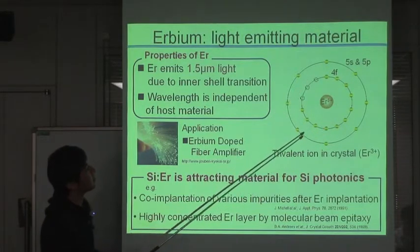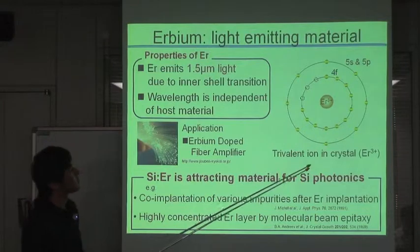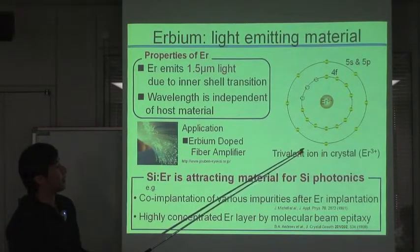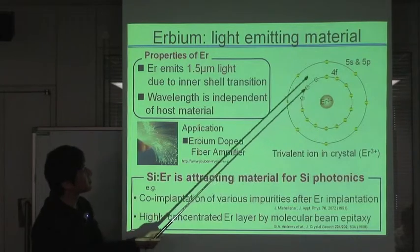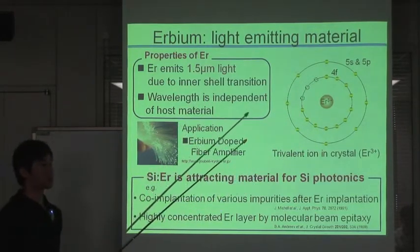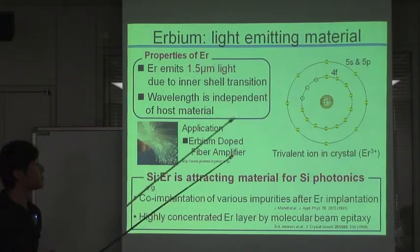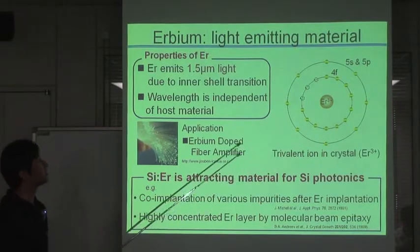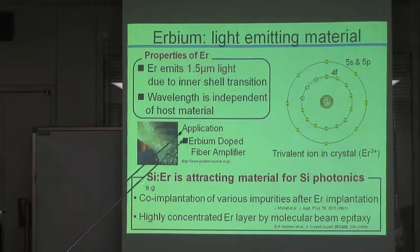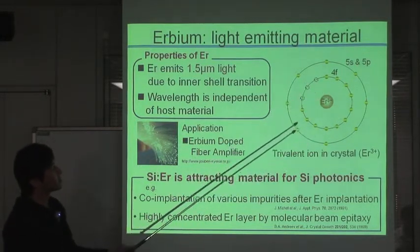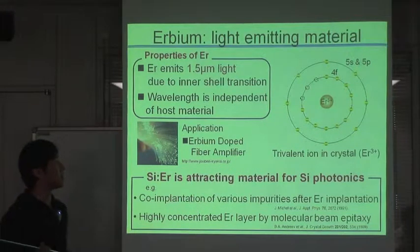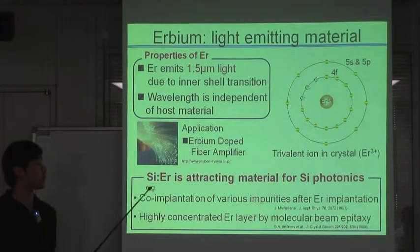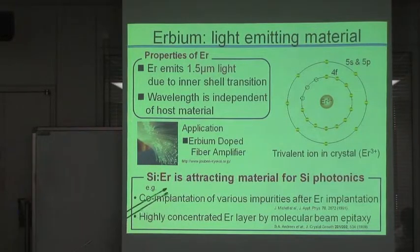The 4F electrons are occupied incompletely while the outer 5S and 5P electrons are occupied completely. Due to this 4F electrons' internal transition, the 1.5 micrometer light is emitted. And the wavelengths from this transition are independent of host material because the 4F electrons are completely shielded by outer 5S and 5P electrons. This property makes it possible to emit 1.5-micrometer light from silicon. So Erbium-doped silicon is a very attractive material for silicon photonics.